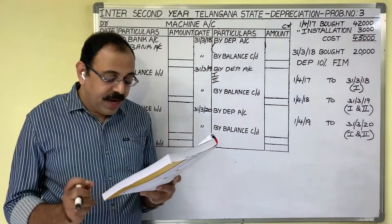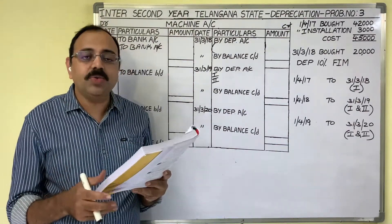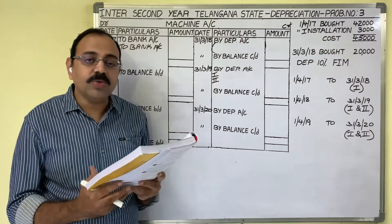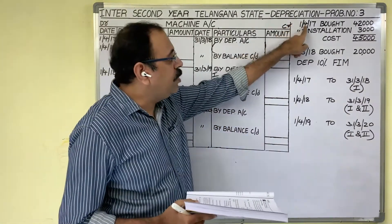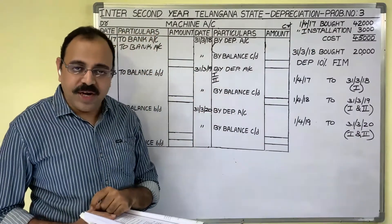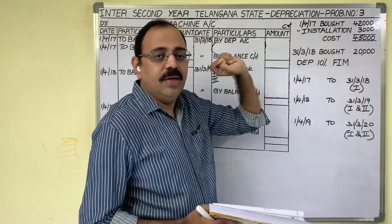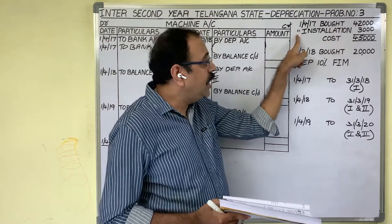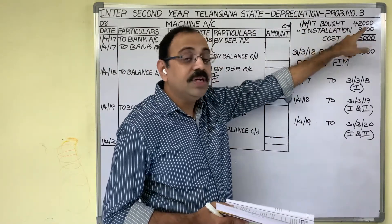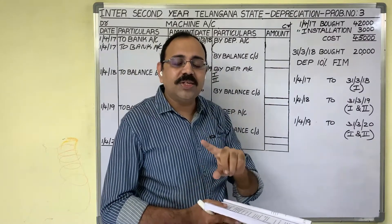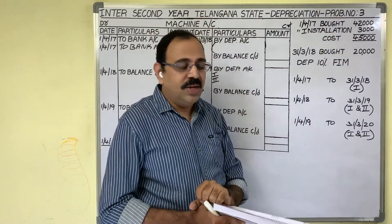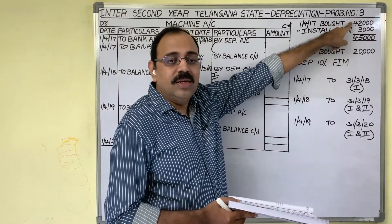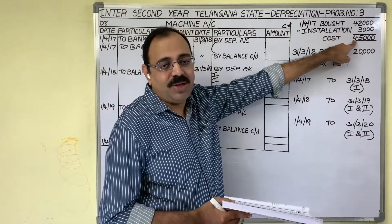Let us start the problem. Kiran and Sons purchased a machine for 42,000 rupees and paid 3,000 rupees for its erection on 1st April 2017. Erection charges are also known as installation charges. When installation charges are given, we should add them to the purchasing price. So the total cost of the asset is 45,000 rupees.